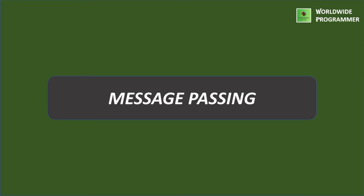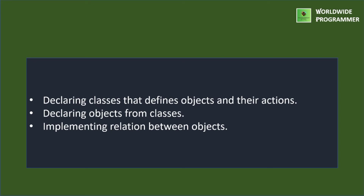Next one is message passing. Object-oriented programming includes objects which communicate with each other. Programming with these objects should be followed in steps: first, declaring classes that define objects and their actions; next, declaring objects from classes; and finally, implementing relations between objects.